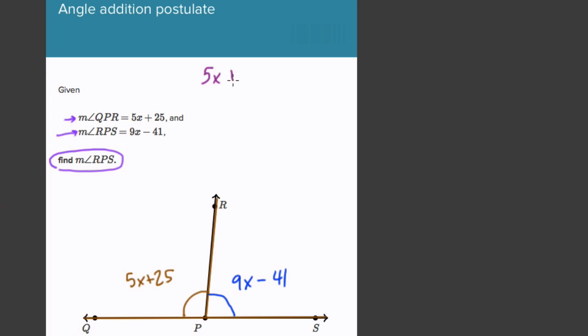So I can write 5x plus 25 plus 9x minus 4. If I add them up, I get 180 degrees. So 25 minus 4 is 21. 9x and 5x is 14x. So 14x plus 21 equals 180.